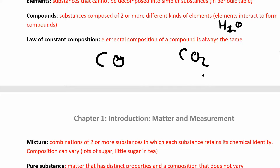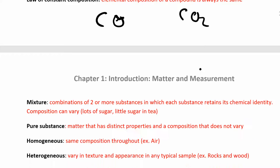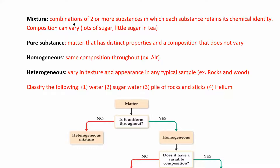A mixture is a combination of two or more substances in which each substance retains its chemical identity. For example, tea is a mixture of sugar and water. You can add a lot of sugar or just a little, but sugar and water is your mixture. You can separate the sugar and the water — each component retains its chemical identity. The important part is that the composition can vary.